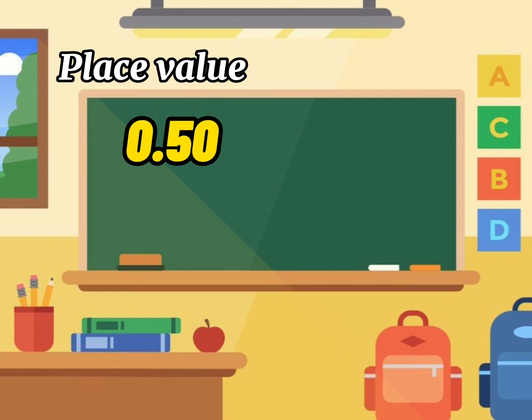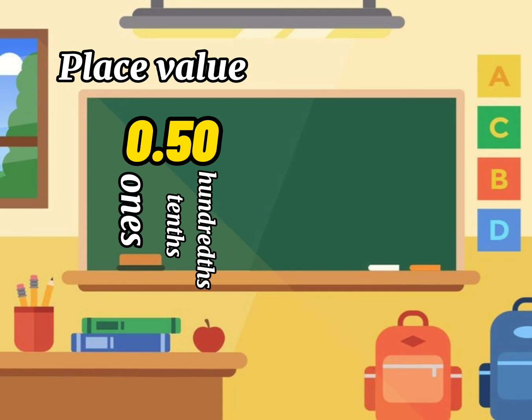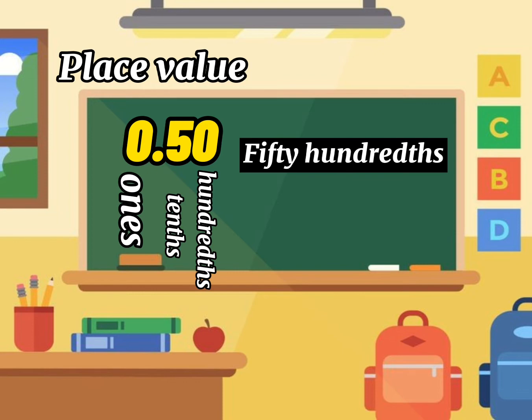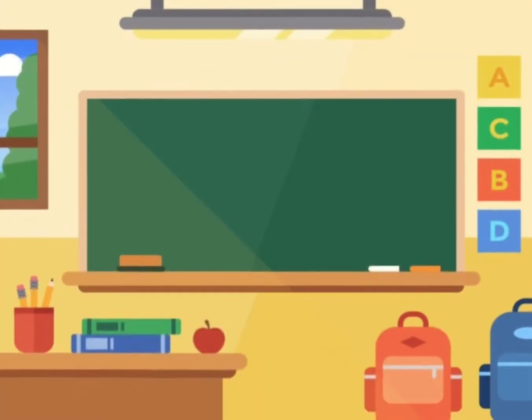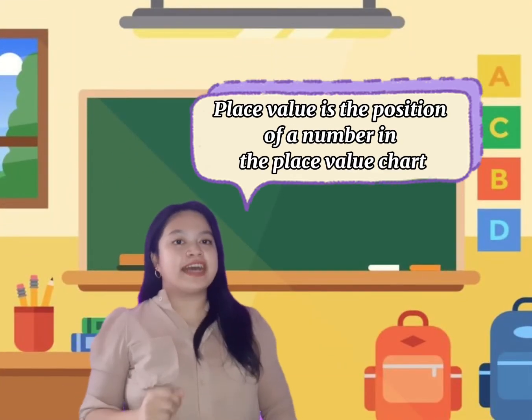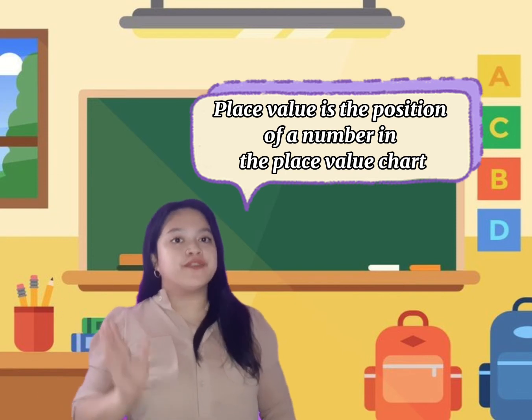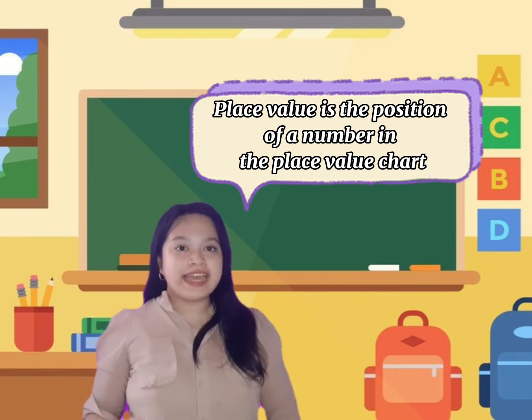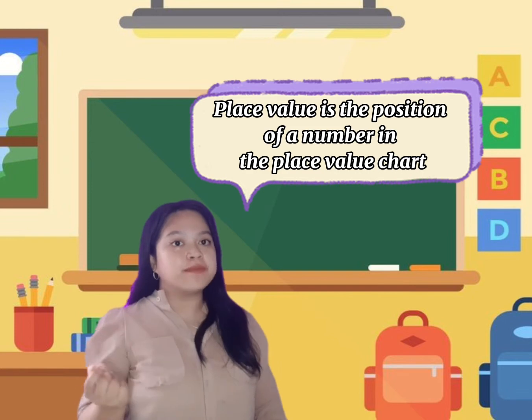The number 0.5 is read as five tenths, and its value is five. Another example is 0.50. The place value of zero is in the ones place, the place value of five is in the tenths place, and the last zero is in the hundredths place. It is read as fifty hundredths.